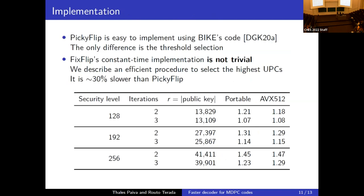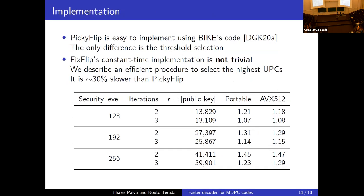For implementation: picky_flip is easy to implement using BIKE's existing code because the only difference is threshold selection. However, fix_flip's constant-time implementation is non-trivial — the paper describes an efficient procedure to select the highest UPCs using a sequence of counting sorts, and discusses ideas for randomizing which bits to flip. Fix_flip iterations are about 30% slower than picky_flip, so they cannot rely solely on fix_flip iterations.